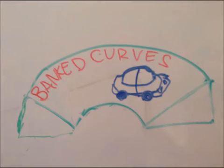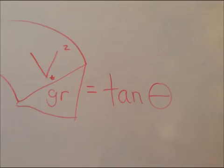Equation for banked curves: V squared over G R equals tangent theta.